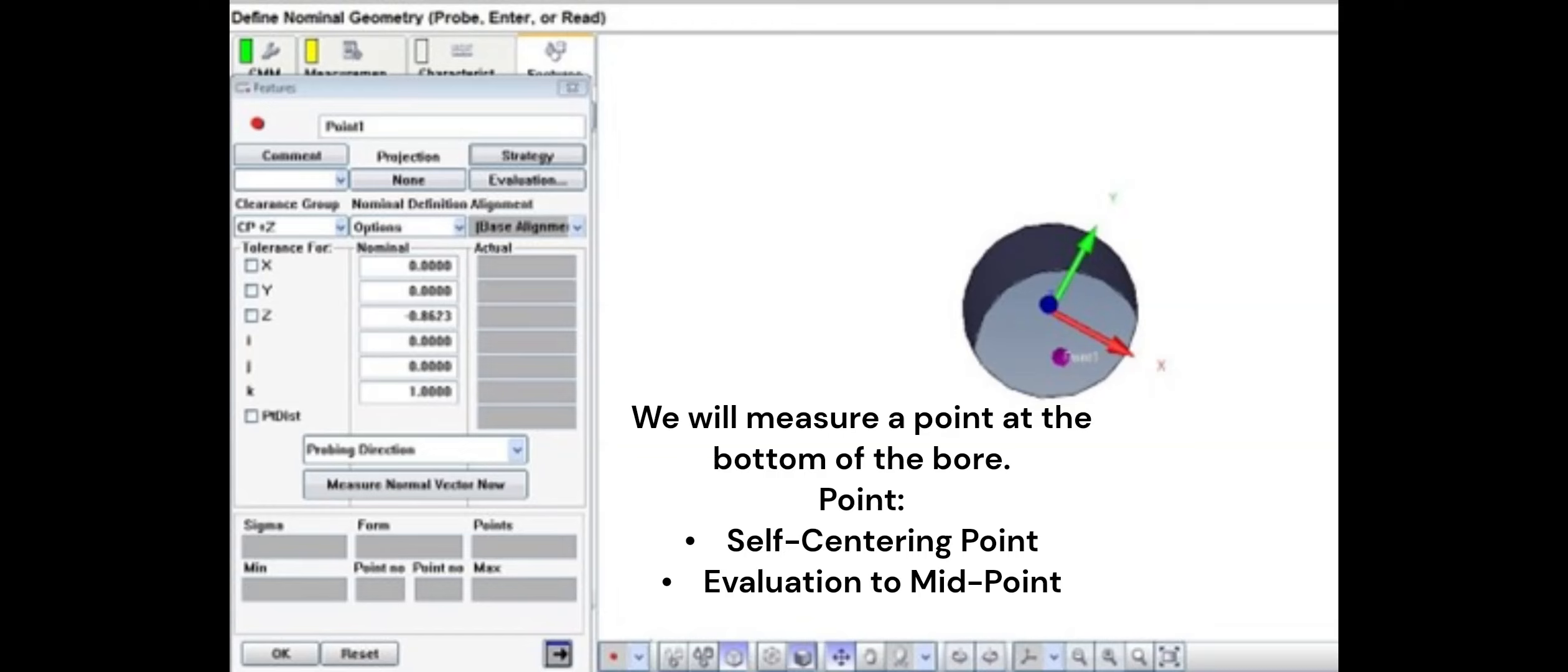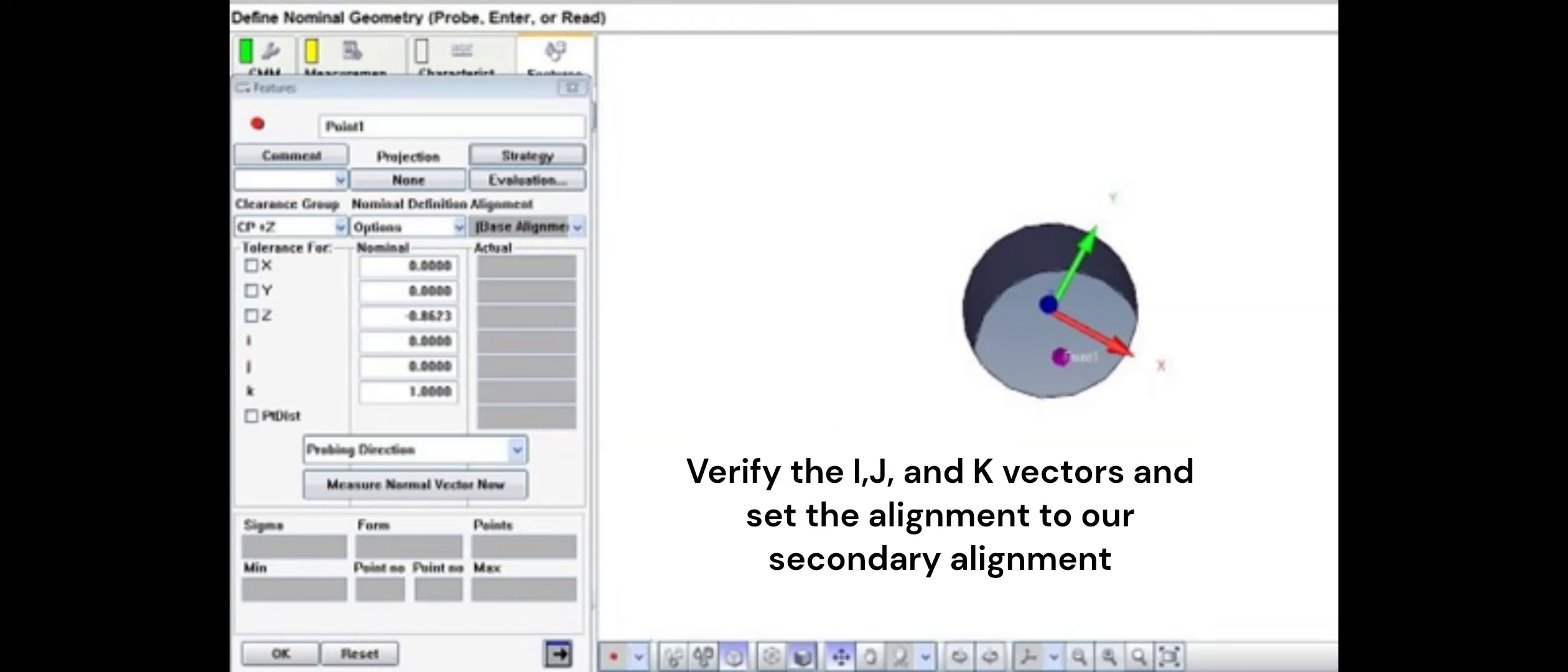Set the evaluation to midpoint. When you create the point, you may have to adjust the point I, J, K vectors to drive straight into the bottom of the bore.